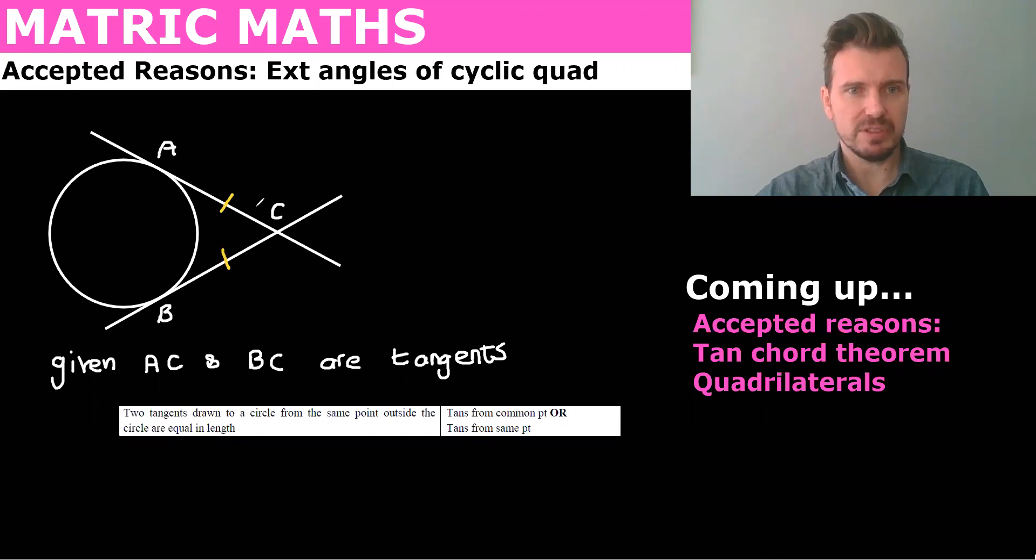So if this is what we're given, the yellow is what we know. So we know that AC is equal to BC, and the reason is tans from, you can either say same point or common point,